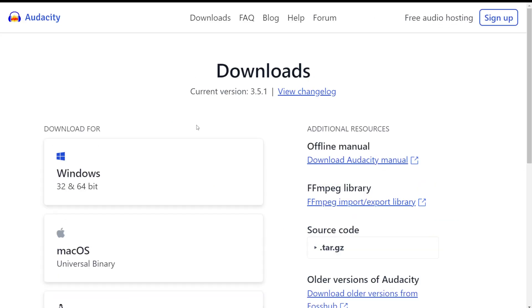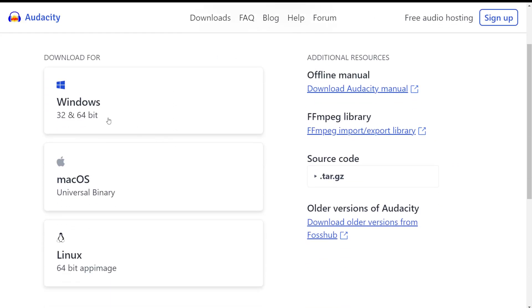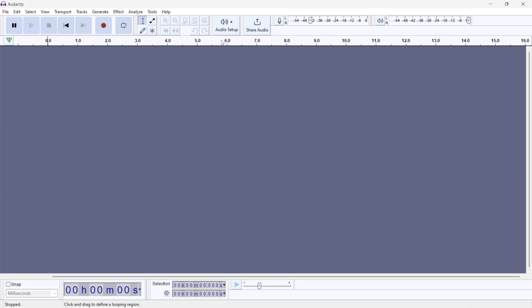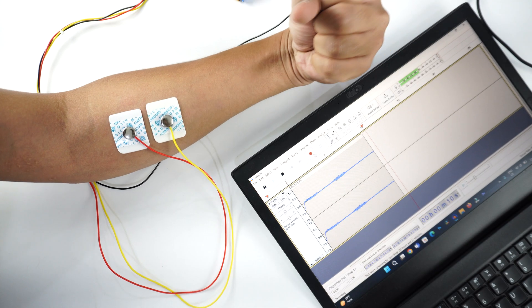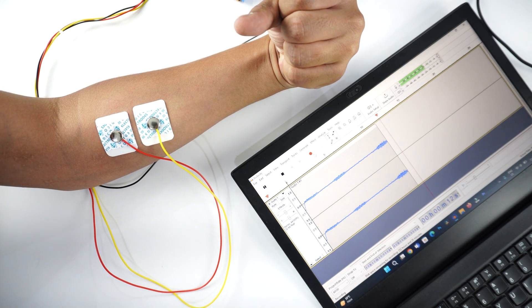The second option is to use Audacity. You can download it using the link in the description box below. Now open the software, set the recording device to microphone, and start the recording. Flex your arm to be able to visualize the muscle signals in Audacity.